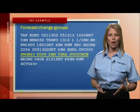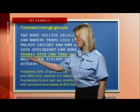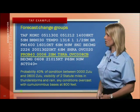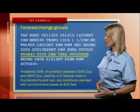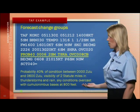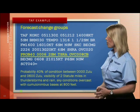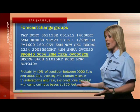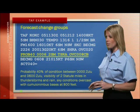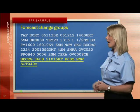Here's the next one: Probability. There's a 40% probability that conditions between 0000 Zulu and 0600 Zulu will be visibility of 2 statute miles in thunderstorms and rain, sky conditions overcast with cumulonimbus bases at 800 feet.